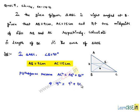plus BC squared. This implies 15 squared is 225, which equals 9 squared is 81, plus BC squared. Therefore BC squared equals 225 minus 81, which equals 144.